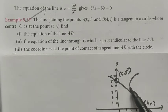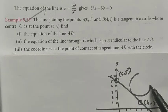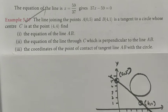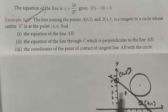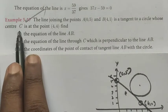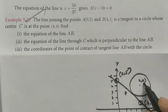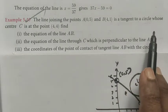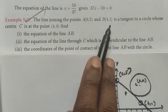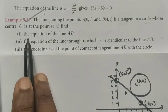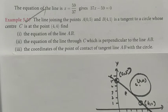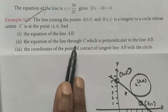If the circle is touched at exactly one place, we call it a tangent. The center of the circle is given as C at the point (4,4). Let me take it as C. The line joining points A and B is a tangent to the circle whose center is at (4,4). Find the equation of the line AB.